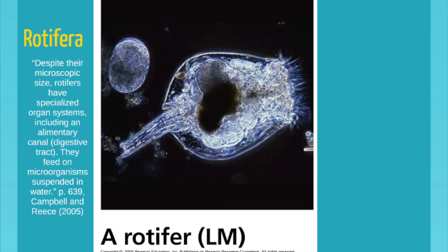Last on the list are the rotifers, still an invertebrate. Even though they're microscopic, they have specialized organ systems. They have an alimentary canal, meaning they have an opening and exit for digesting food. These live in our creek. They're kind of a weird group that belong with the invertebrates but have a number of characteristics like digestive organs and specialized ways of catching food, and they move and swim very fast. Next up is mollusks, and then we'll get to arthropods, and then we'll be done with invertebrates.